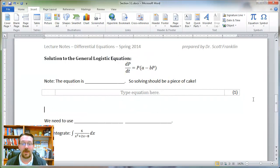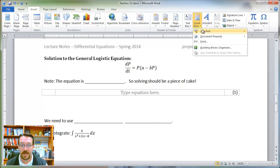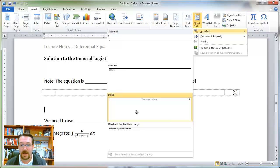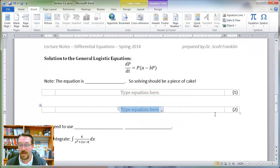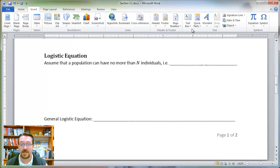Now anywhere later on in my document that I want to insert an equation, all I've got to do is go to Quick Parts under Auto Text and select Insert Equation, and now I can type in my equation here, and I've got the next number higher. I can even go earlier in the document and do the same thing.